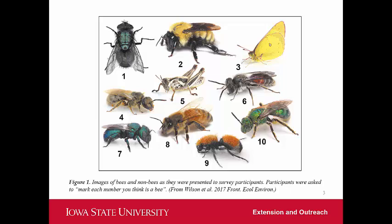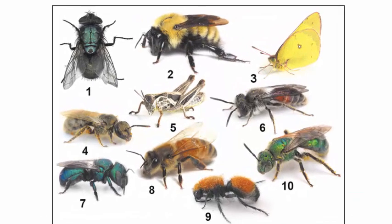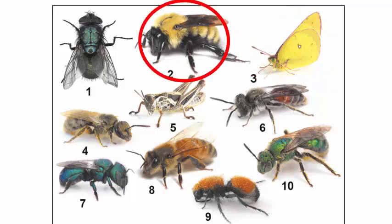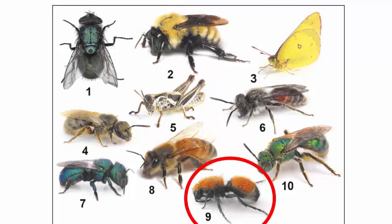There are some obvious ones. Number three is clearly not a bee — most people recognize that. When you think of what a bee looks like, maybe you think of something big, yellow, black, and fluffy. Number two seems like a bee. But as you look around it gets more difficult: can bees be green? How hairy are they? Do all bees have wings?